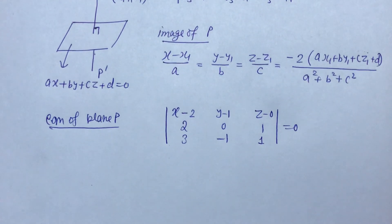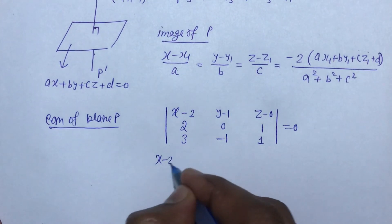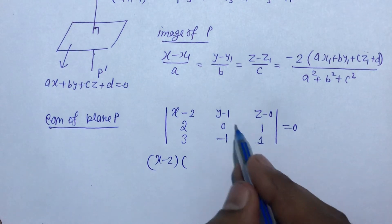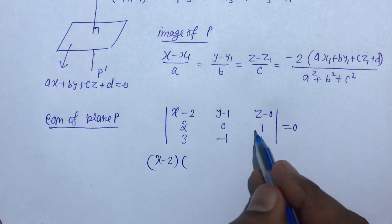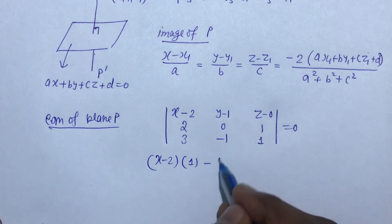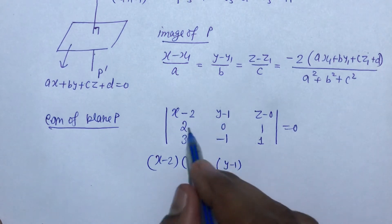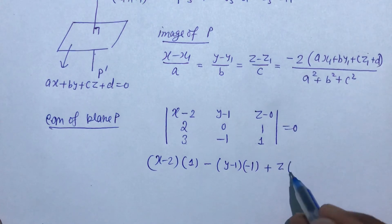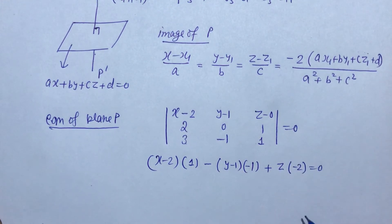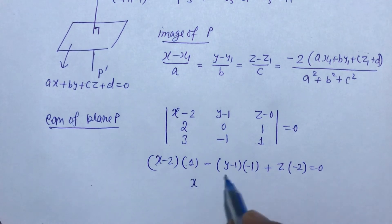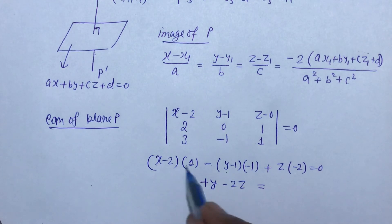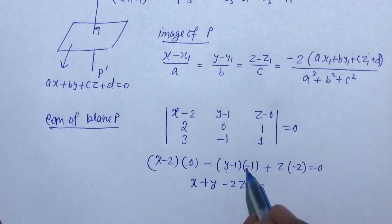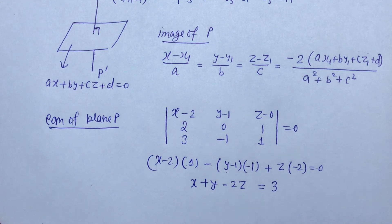Expanding the determinant: (x minus 2)(0·1 - (-1)·1) - (y minus 1)(2·1 - 3·1) + (z minus 0)(2·(-1) - 3·0) = 0. Simplifying, the equation of the plane comes out to be x + y - 2z - 3 = 0.